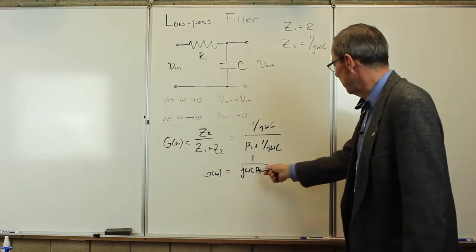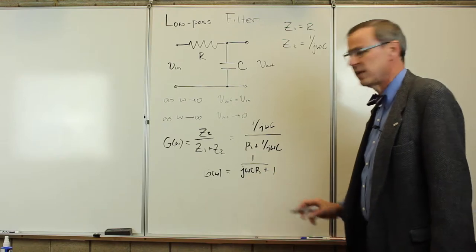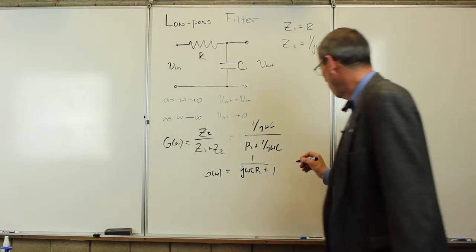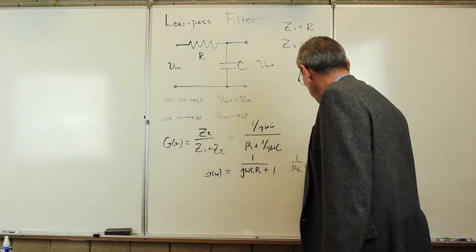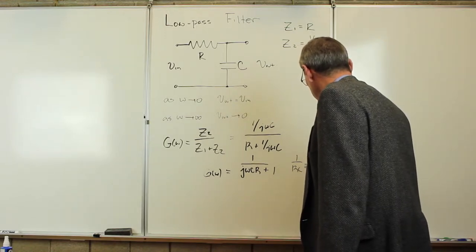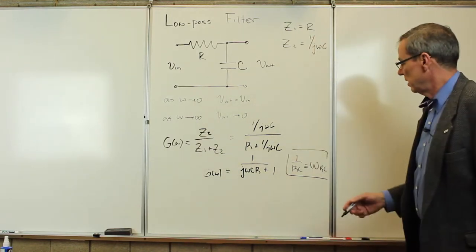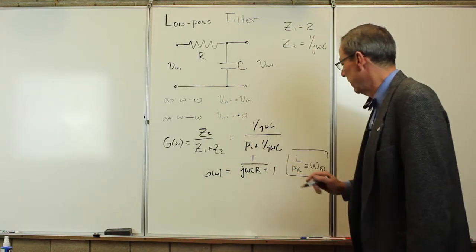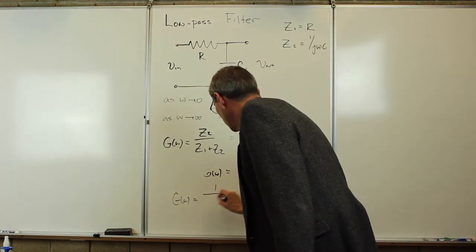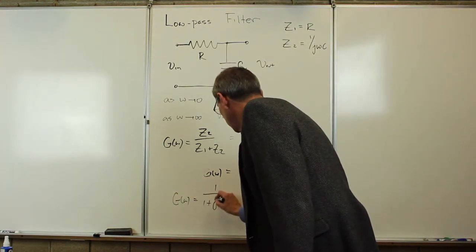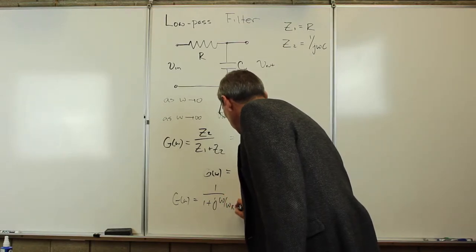And what I'm going to do is that RC combination, you may remember from time domain analysis, since that was a characteristic time, 1 over RC is defined to be a characteristic frequency, omega RC. So the gain is going to be 1 over 1 plus J omega over omega RC.